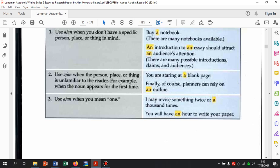Use a or an when you mean one. Jadi, kalau ada membahas satu, langsung taruh a atau an. Kebiasaan kita adalah kita tidak pernah menaruh artikel a atau an ketika menyatakan satu hal. Contoh. I may revise something twice or a thousand times. Kita biasanya seringnya gini: I may revise something twice or thousand times. Harusnya a thousand times. You will have an hour to write your paper. Instead of you will have one hour to write your paper.